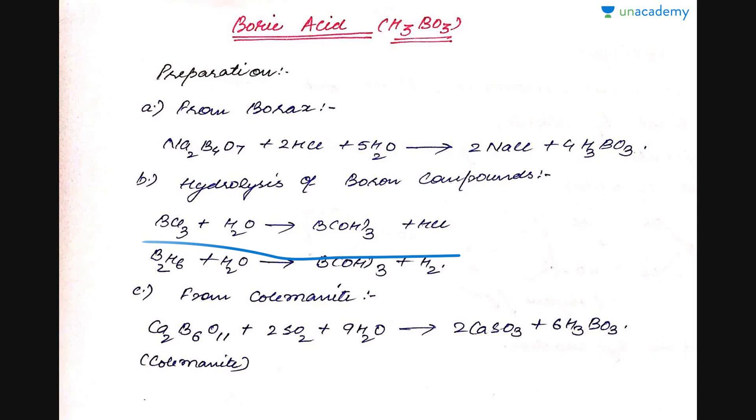BCl3 on treatment with water gives B(OH)3, which is the other way we write boric acid. As it is H3BO3, it consists of three hydrogen atoms and three oxygen atoms, therefore it could be written as B(OH)3.